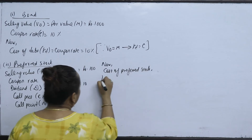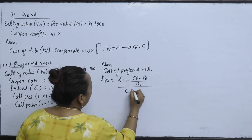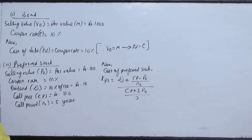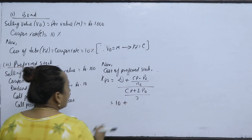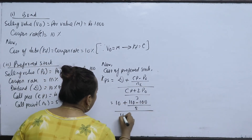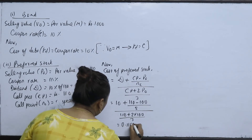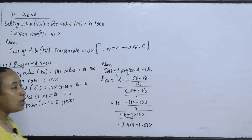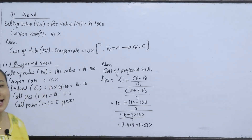The cost of preferred stock formula is: KPS = (Dividend + (Call Price − P0) / n) / ((Call Price + 2×P0) / 3). Here, dividend is 10, call price is 110, P0 is 100, and n is 5 years. This gives KPS = 0.1163, which means 11.63%. Since preferred dividends are already after-tax, this is the after-tax cost.